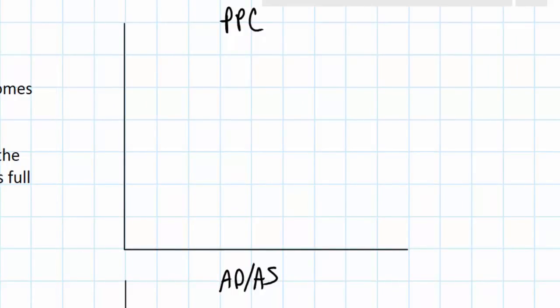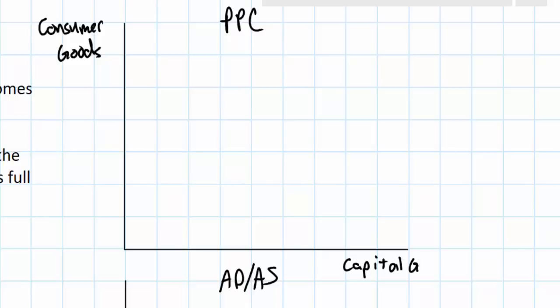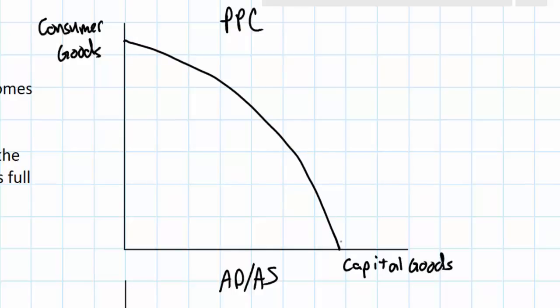For the production possibilities curve, the vertical axis shows consumer goods and the horizontal axis shows capital goods — those technology tools used by firms to produce other goods. We know that due to the scarcity of natural, human, and capital resources, there is a trade-off as a country faces its decision about what combination of capital and consumer goods to produce.